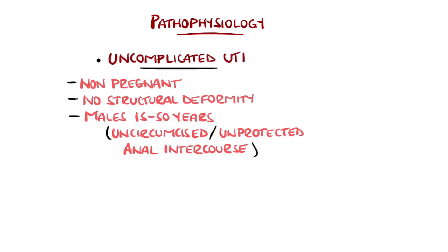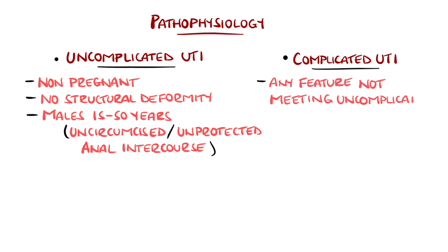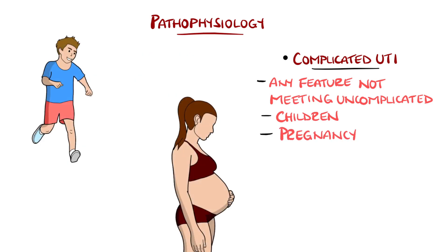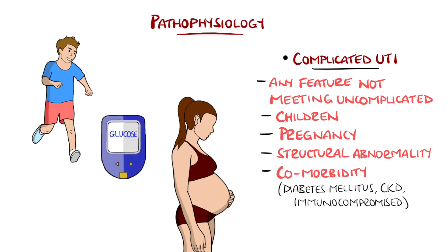Complicated is defined as any UTI not meeting the uncomplicated criteria, generally including children, pregnancy, structural abnormalities, a comorbidity that increases infection risk like diabetes mellitus, an immunocompromised state, or chronic kidney disease. Recent surgery or device use, for example a catheter or after cystoscopy, are also considered complicated.